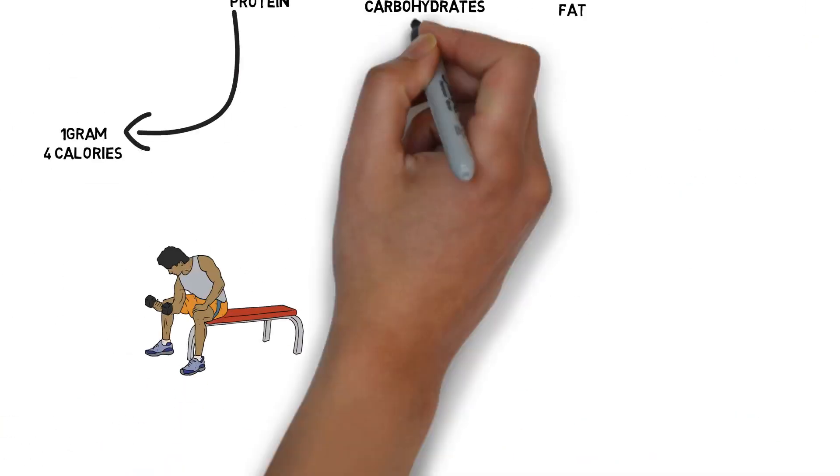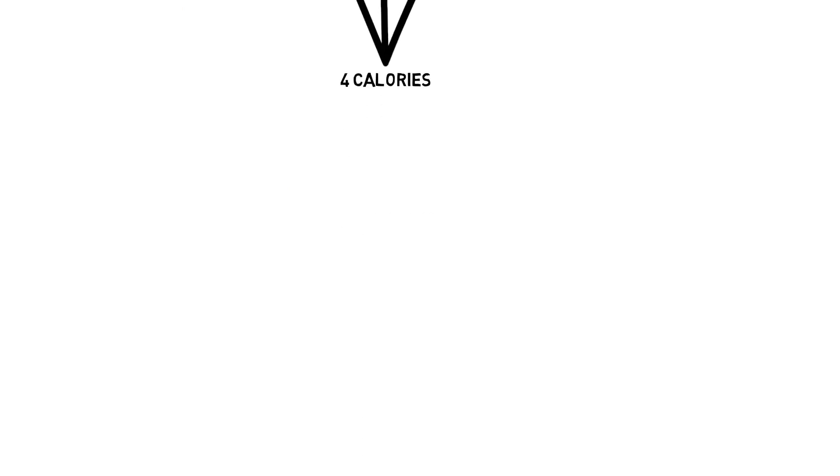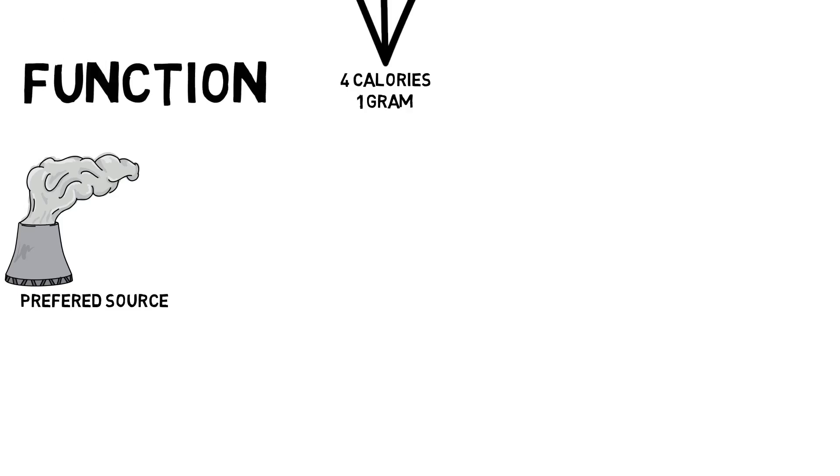Moving on to carbohydrates, now just like protein it has four calories per one gram. Now carbohydrates are our body's most preferred source of energy over all three. The main function of this macronutrient is simply providing us with energy to go through things such as physical activities like running.